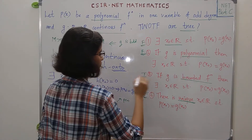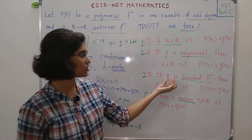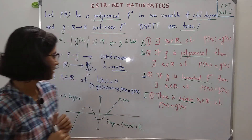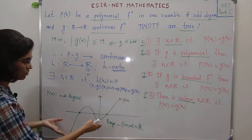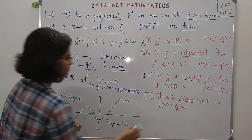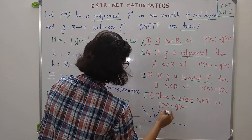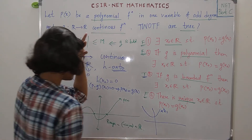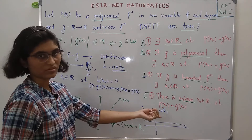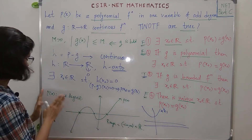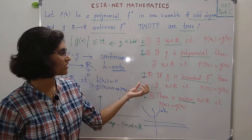So we have found X₀ such that P(X₀) equals G(X₀) — option 3 is true. The important facts used are: G is bounded, and P(x) is a polynomial of odd degree — that is why it is onto. If P(x) were even degree, like x² + 1, and G were a constant function below the range of P, they would not intersect. So the odd degree condition is very important. The correct option is just option 3.